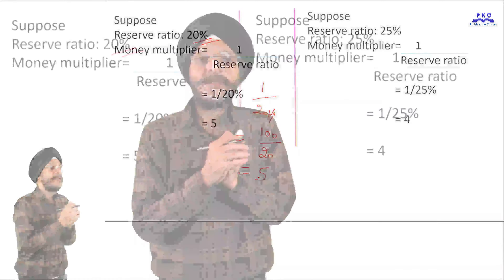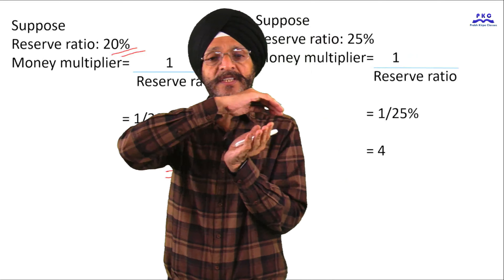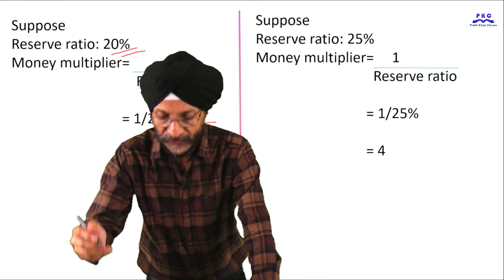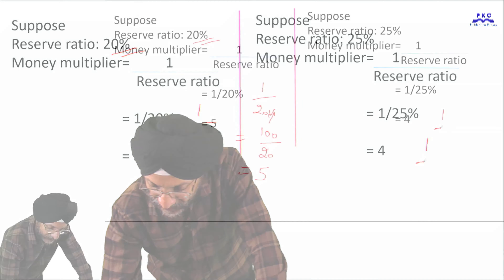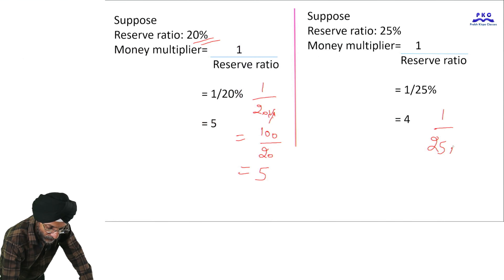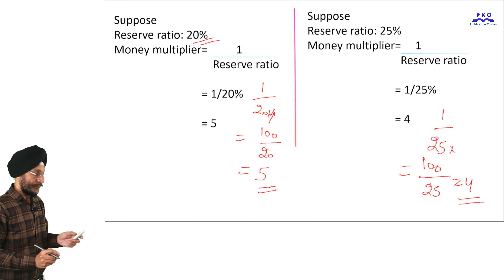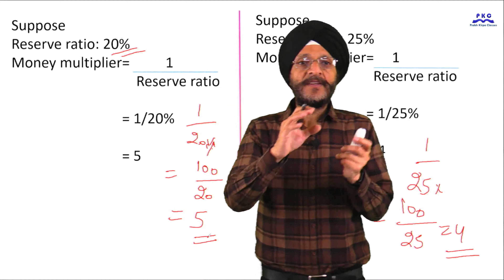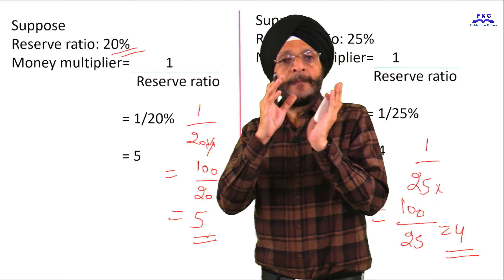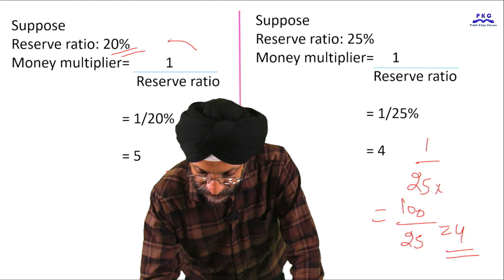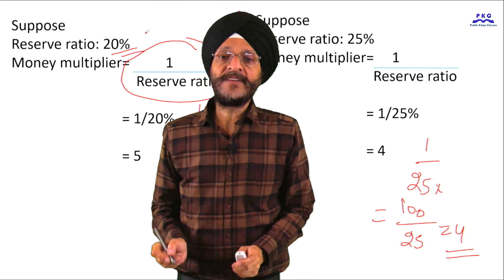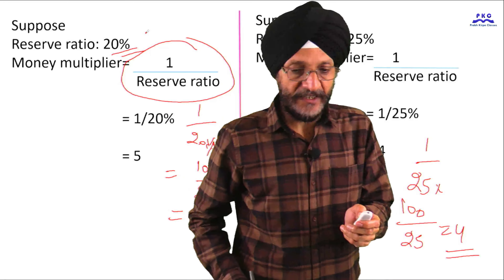So if the reserve ratio is increased from 20 to 25, the money multiplier decreases from 5 to 4. In this way, we can calculate the money multiplier by the formula 1 over reserve ratio, which is set by the central bank.